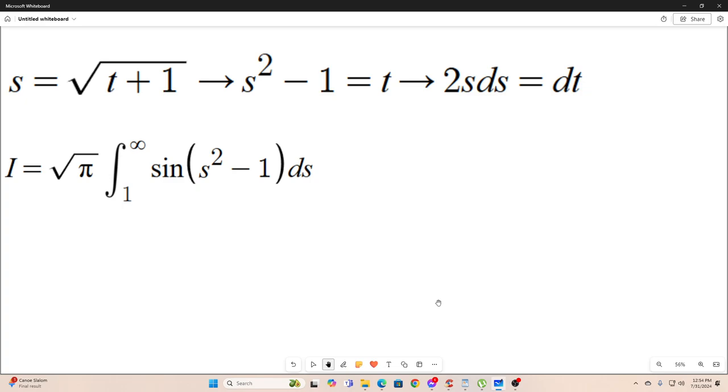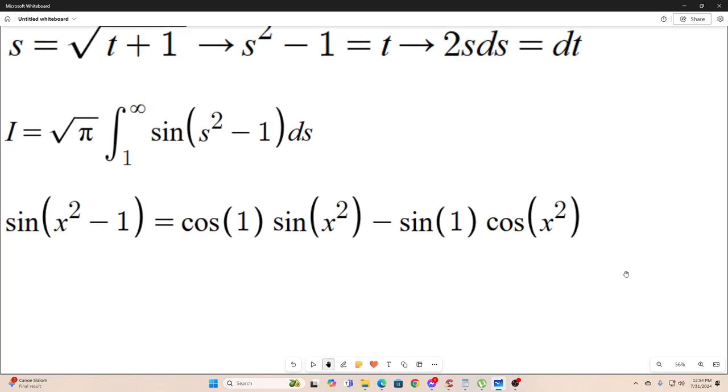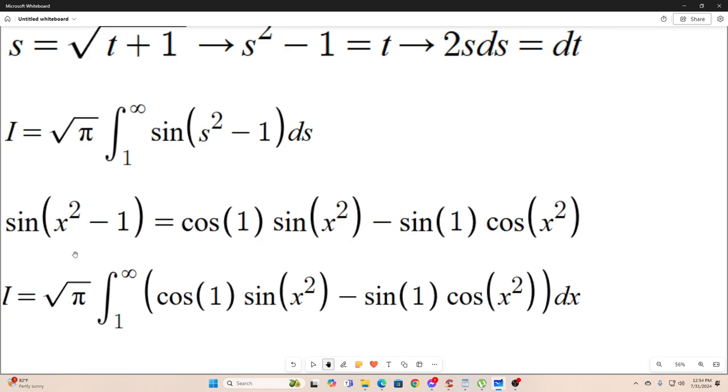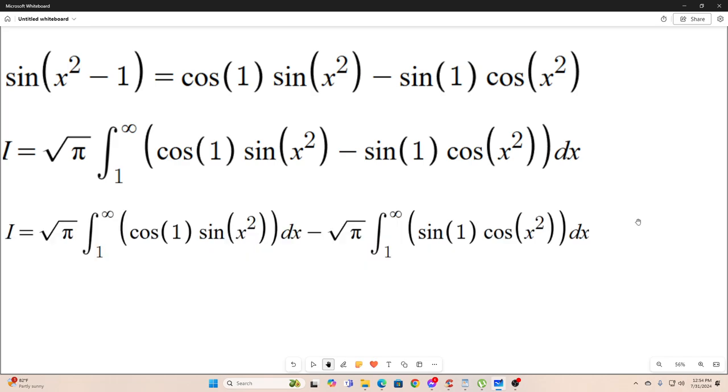Now, we're going to break out an idea from the angle sum identity for sine from trigonometry. We have that sine of x squared minus one is equal to cosine one times sine x squared minus sine one cosine x squared. And we will replace this with this. Of course, I'm taking s back to x. So now we have this. This mess right here. All right. So next, you notice I just split that up into two separate integrals. No biggie there.